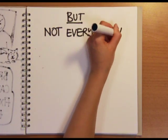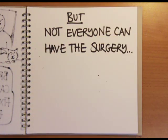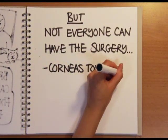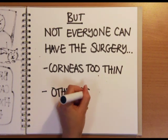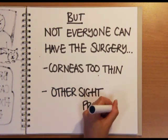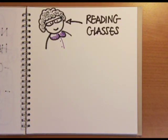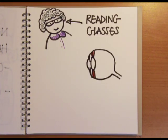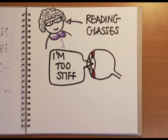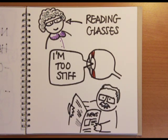However, not everyone can have their eyesight corrected this way as some people's corneas are too thin to reshape while others have more complicated sight problems that wouldn't be solved using the laser. And even people who've had the surgery may still need reading glasses when they get older. This is because the lens in our eyes becomes less able to change shape with age making it harder to focus on close-up things like your daily newspaper.